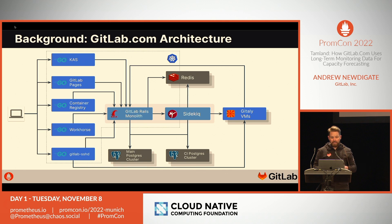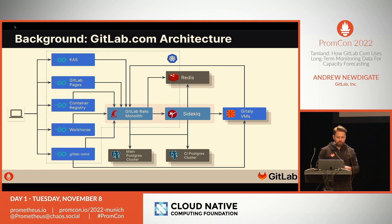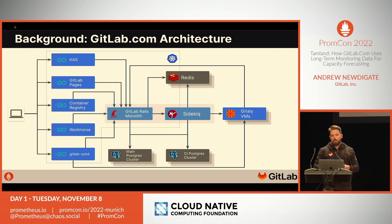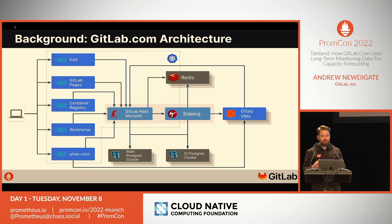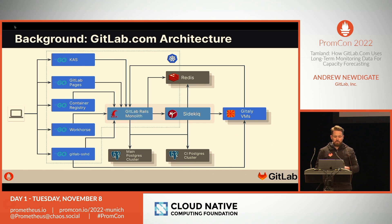Behind the application, we run Gitaly, which is our Git RPC service. This runs on a large number of VMs with block storage attached to them. We have six Redis clusters in our production fleet, but the number is always increasing. For any given cluster, a single core on the primary instance of that cluster is a resource bottleneck, because much of the Redis workload runs on a single thread.